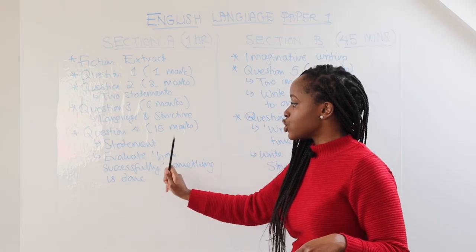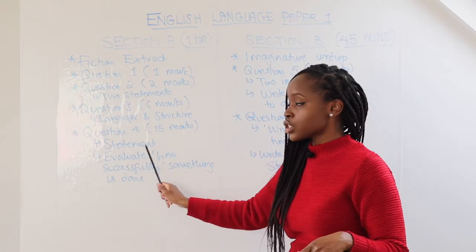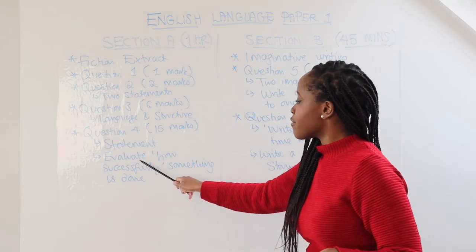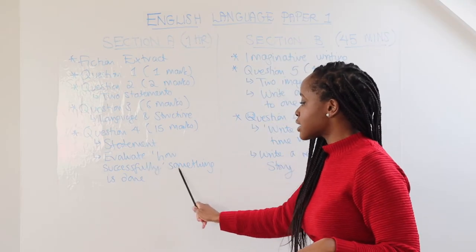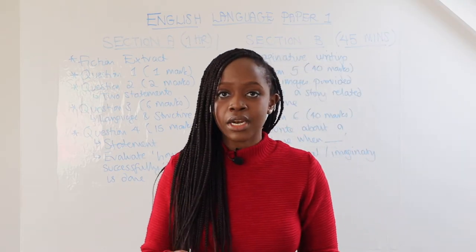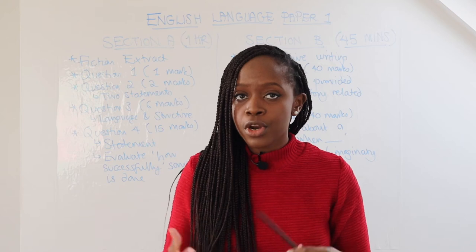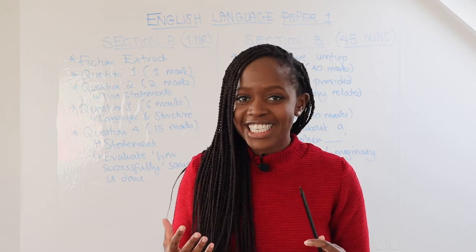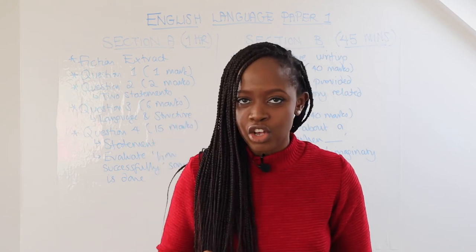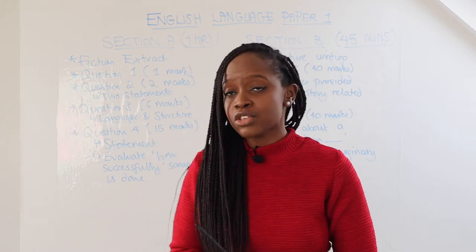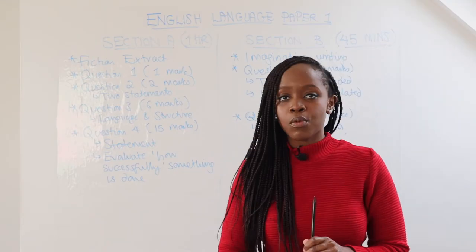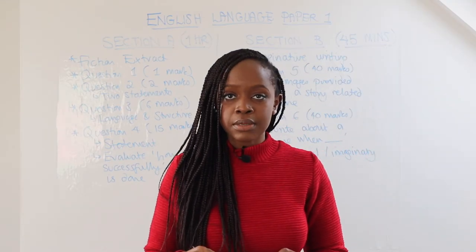For question four, which is worth 15 marks, you usually get a statement and you have to evaluate how successfully something is done in relation to that statement. I'm going to go over in detail exactly how to do so, and we're going to look at an example. But that's really it for section A of the English language paper one exam.